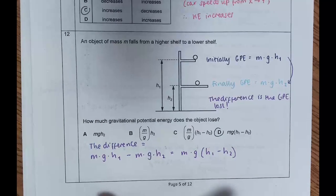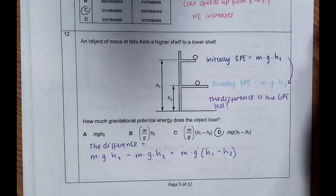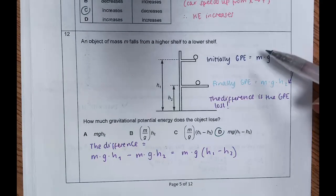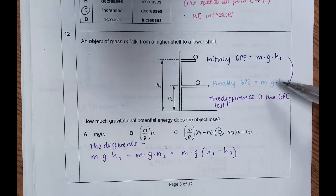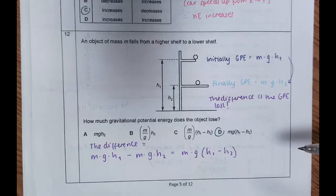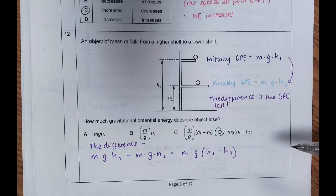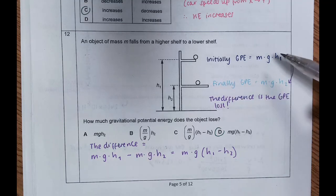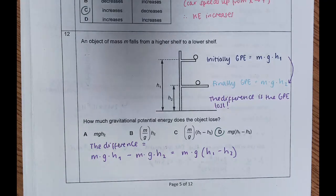In question twelve, an object of mass M falls from a higher shelf to a lower shelf. Initially GPE is MgH1; after it falls, it's MgH2. The difference is the loss of gravitational potential energy: MgH1 − MgH2. Factorising gives Mg(H1 − H2), which is answer D.